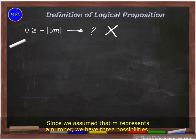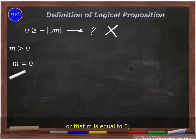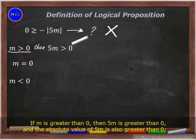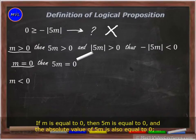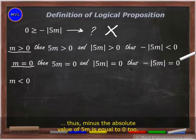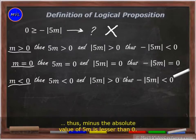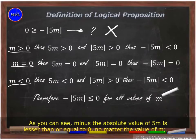Since we assumed that m represents a number, we have three possibilities: that m is positive, that is, greater than 0; that m is equal to 0; or that m is negative, that is, less than 0. If m is greater than 0, then 5m is greater than 0, and the absolute value of 5m is also greater than 0. Thus, negative the absolute value of 5m is less than 0. If m is equal to 0, then 5m is equal to 0, and the absolute value of 5m is also equal to 0. Thus, negative the absolute value of 5m is equal to 0. If m is less than 0, then 5m is less than 0, and the absolute value of 5m is greater than 0. Thus, negative the absolute value of 5m is less than 0. As you can see, negative the absolute value of 5m is less than or equal to 0, no matter the value of m.